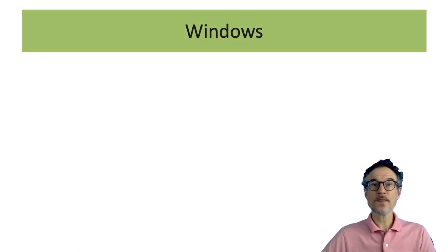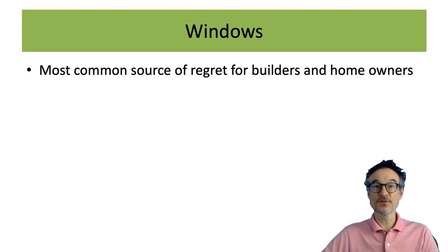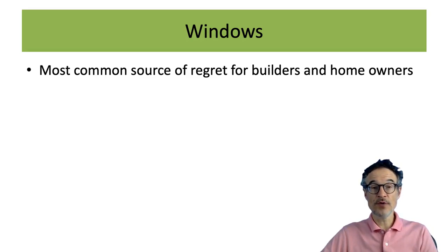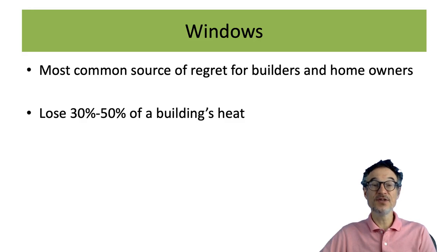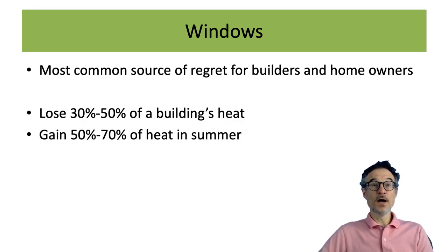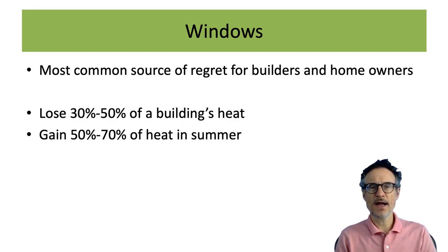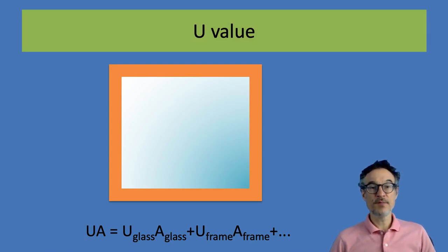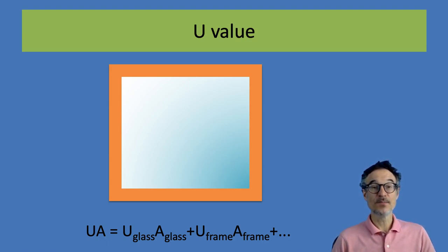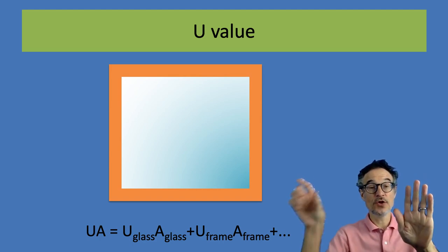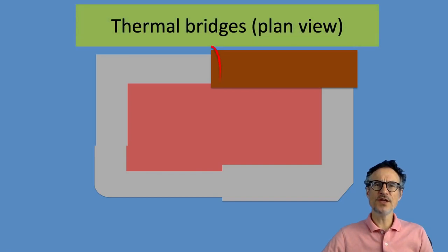Windows are the most common source of regret for builders and homeowners — they wish they had a window in a different place or a different kind of window. As we've seen, something like 30 to 50% of a building's heat is lost through windows, and in the summer windows can gain a lot of heat. We need to think carefully about where to put them and which windows to use. For window performance we want to look at the U-value, which tells us how much heat that window is going to lose.